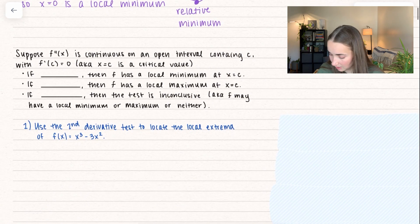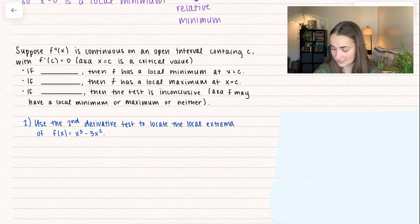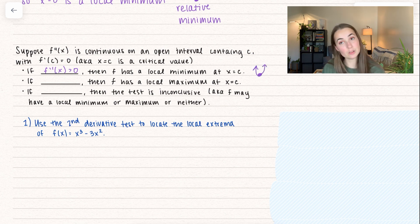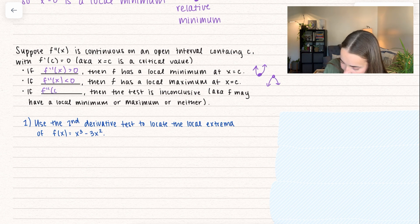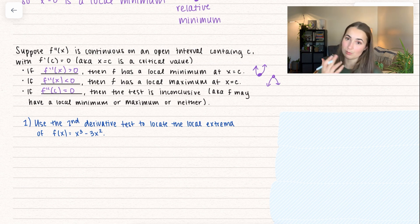Here is the formal definition: suppose f double prime is continuous on an open interval containing c, with f prime of c equal to 0, meaning x equals c is a critical value. If f double prime of c is greater than 0 (concave up), we have a relative minimum at x equals c. If f double prime of c is less than 0 (concave down), we have a local maximum. If f double prime of c equals 0, the test is inconclusive — f may have a local minimum, a local maximum, or neither, and we'd use the first derivative test instead.